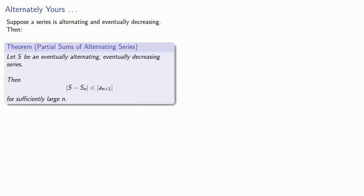The easy case is that if we have an alternating and eventually decreasing series. So suppose s is an eventually alternating, eventually decreasing series.